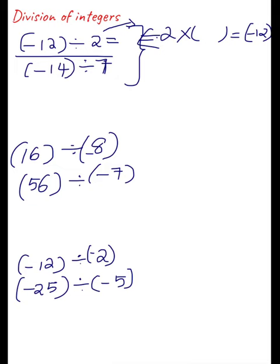So 2 × ? = -12. This is what you have to find. You have already studied about multiplication of integers, so you will understand that 2 into what will be -12. You will see that 2 × (-6) = -12. So you can say that the answer for this will be -6. That is -12 ÷ 2 = -6.